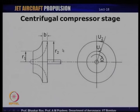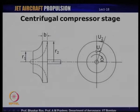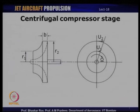Looking at the schematic, the inlet of the impeller is at one radius and the outlet at another. The flow enters the rotor in the axial direction and leaves radially, meaning inlet and exit are at two different radii with two different peripheral velocities. At the inlet, U₁ = omega·r₁ and at the outlet, U₂ = omega·r₂, so U₂ and U₁ are not the same — unlike in an axial compressor where blade speeds at inlet and outlet are the same mean radius.